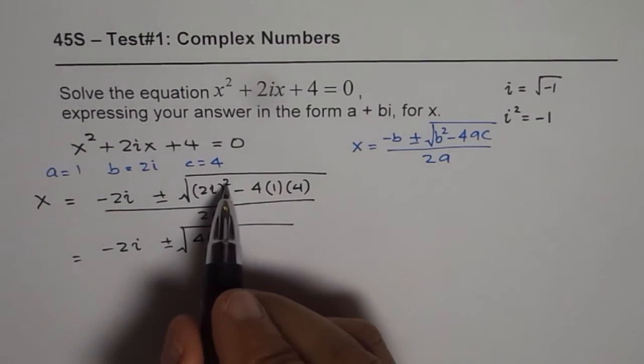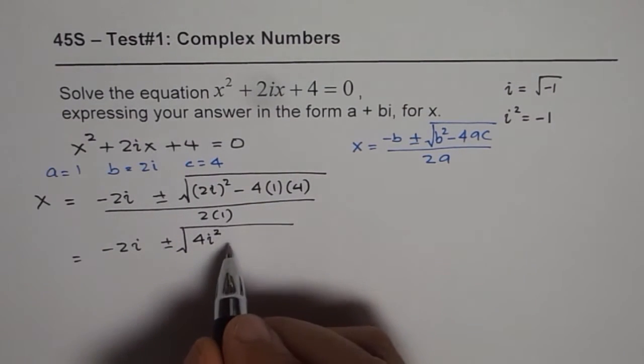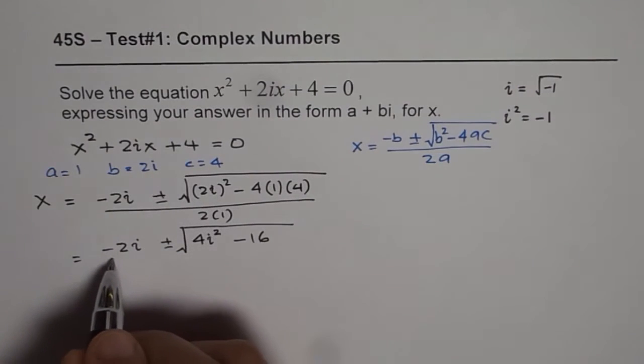So we get minus 2i plus or minus square root of 2i squared gives us 4i squared. 2i whole squared - 2 is also squared and i is also squared. Minus 4 times 4 is 16, minus over 2.